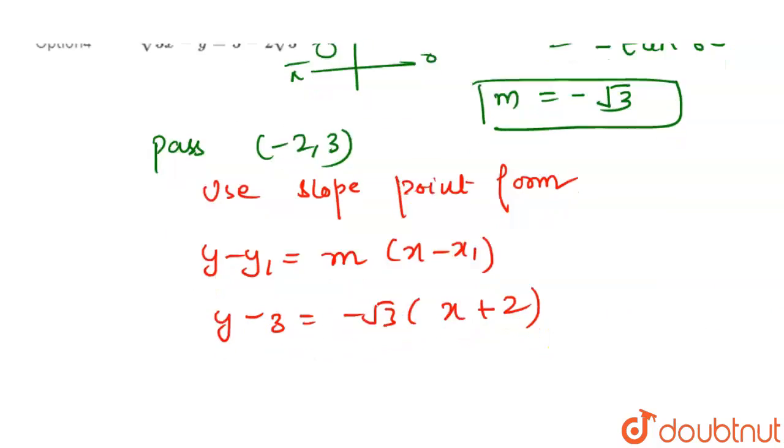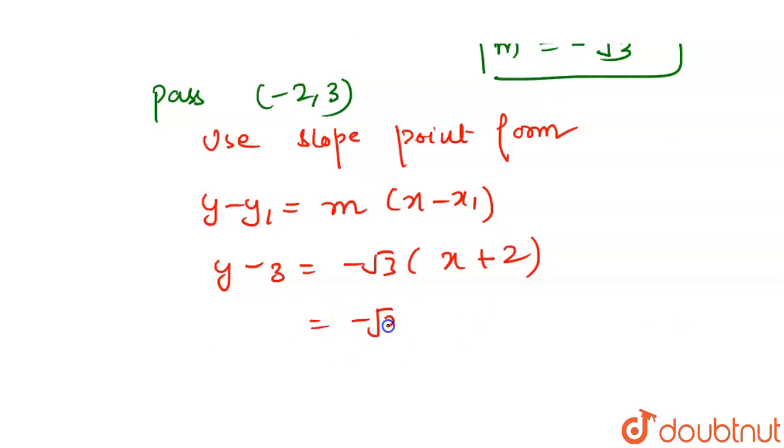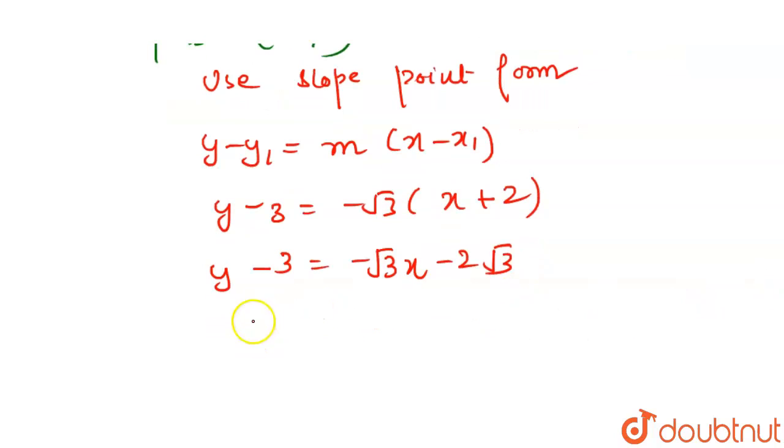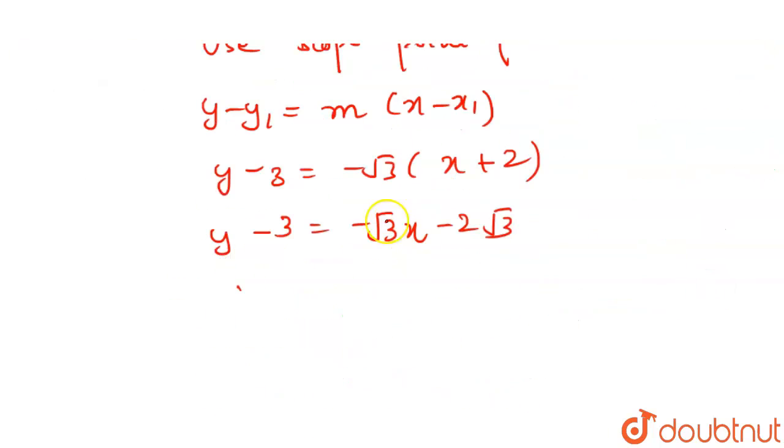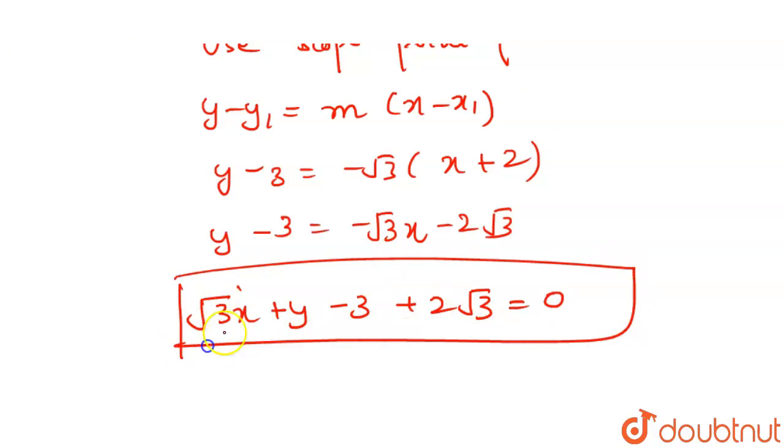So x minus (-2), that is x plus 2. So we will have minus root 3 times (x + 2), which is minus root 3x minus 2 root 3, and y minus 3. So this will give us, we have to find root 3x in positive form, so root 3x plus y minus 3 plus 2 root 3 equals 0.